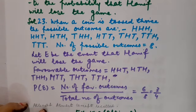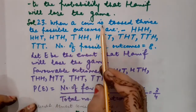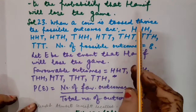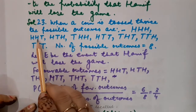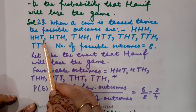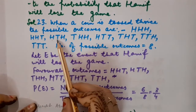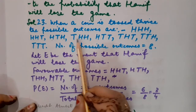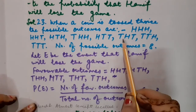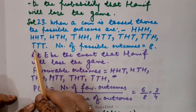When a coin is tossed thrice, the possible outcomes are: HHH, HHT, HTH, THH, HTT, THT, TTH, and TTT. There are 8 possible outcomes in total.